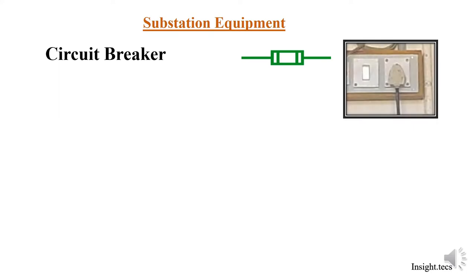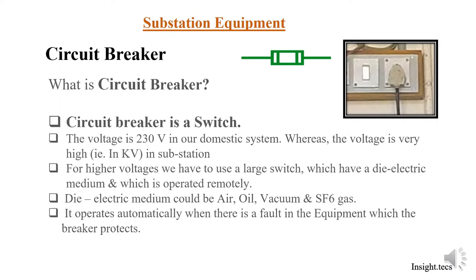A circuit breaker is basically a switch. At our home we have 230 volts in the domestic system, so the switch can do the making and breaking of the circuit. However, the voltage levels are in kilovolts for the substation, so for higher voltages we have to use a larger switch which has some dielectric medium and which can be operated remotely from the control room. Dielectric mediums such as air, oil, vacuum, or SF6 gas are used in circuit breakers. It operates automatically when there is any fault in the equipment which the circuit breaker is protecting.